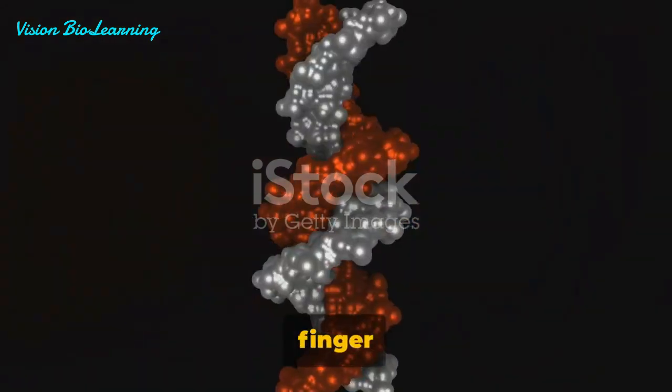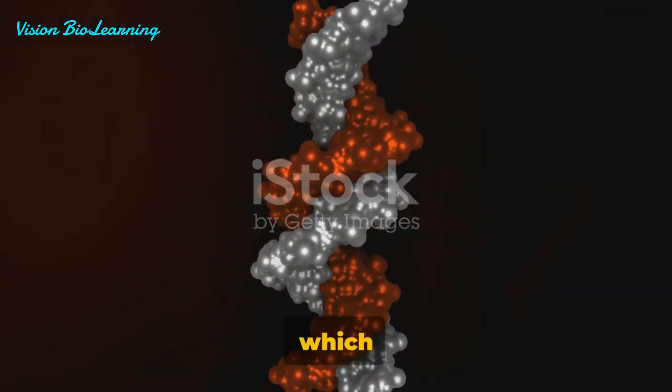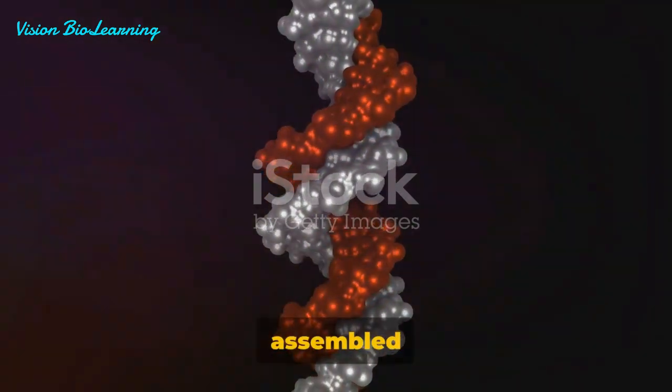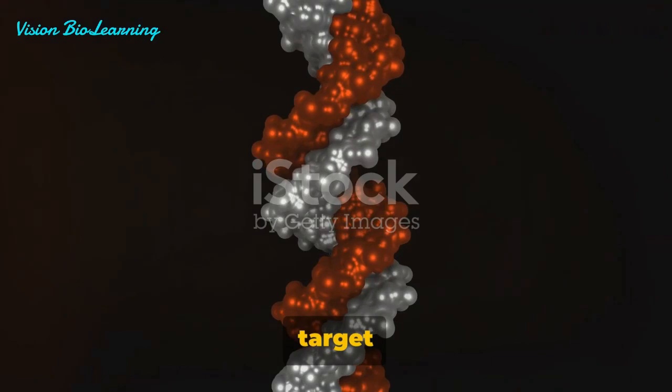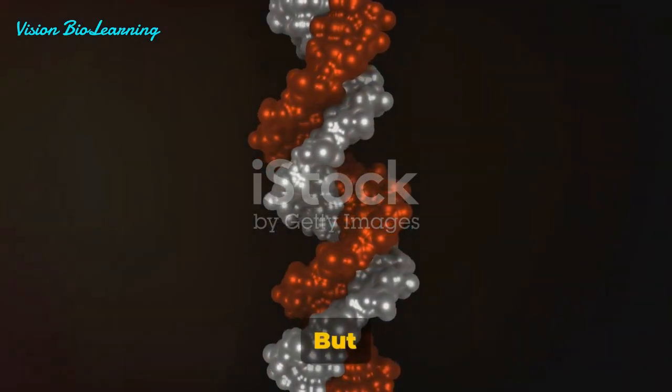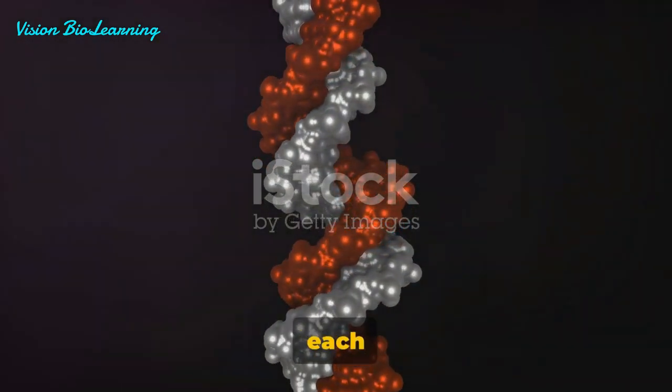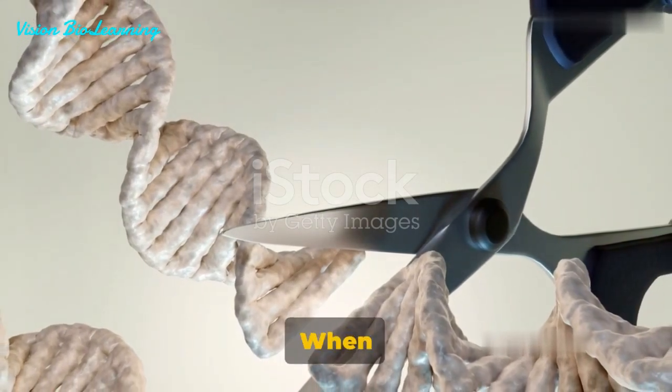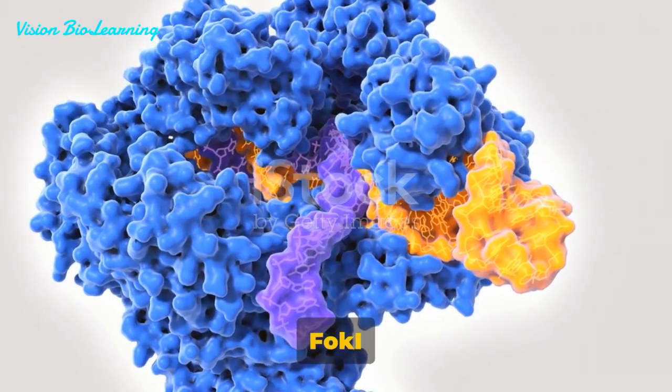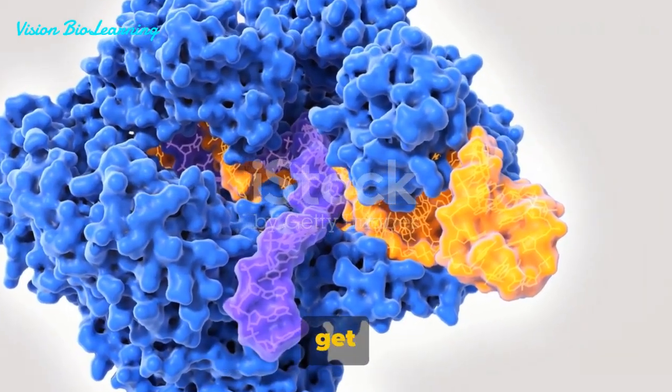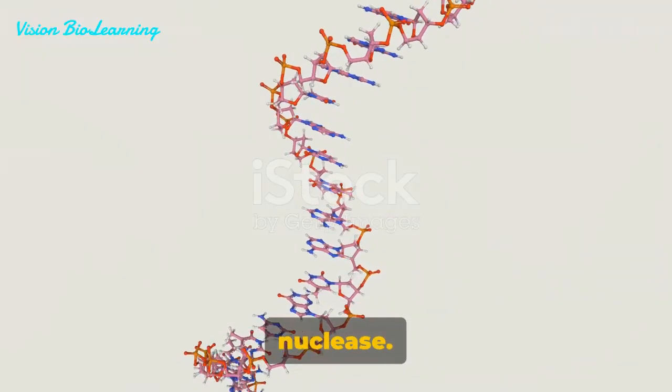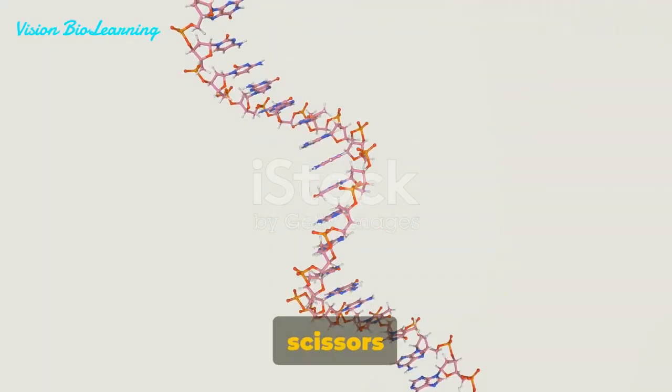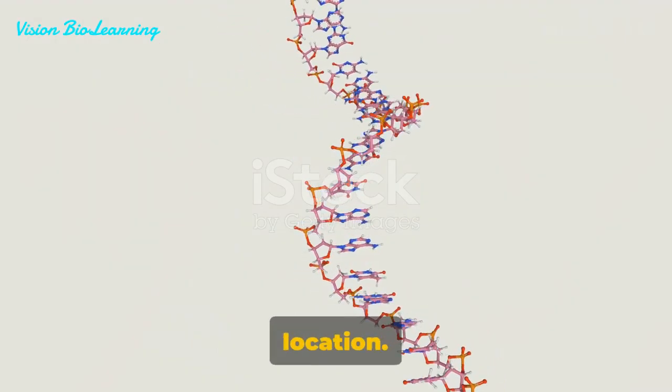One such technology is zinc finger proteins, or ZFs, which are naturally occurring DNA binding domains. Remarkably, they can be assembled in a modular fashion to target specific sequences in our DNA. But how does it work? Well, each zinc finger domain recognizes three base pairs of DNA. When these ZF domains are fused with a protein called FokI endonuclease, we get a programmable site-specific nuclease. In simpler terms, it's like a pair of molecular scissors that can cut DNA at a specific location.